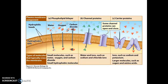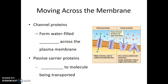Channel proteins allow specific types of molecules, such as ions and water, to pass through. Sometimes these channel proteins will be gated — open occasionally but also at other times closed. Ions such as sodium and potassium will sometimes pass through very specialized carrier proteins. Similar to channel proteins, these still allow molecules to move with the force of diffusion, but the shape is very specific and only particular molecules can pass through. These two forms of diffusion are sometimes referred to as facilitated diffusion. Channel proteins form water-filled tunnels across the plasma membrane, while passive carrier proteins are specific to the molecules being transported.